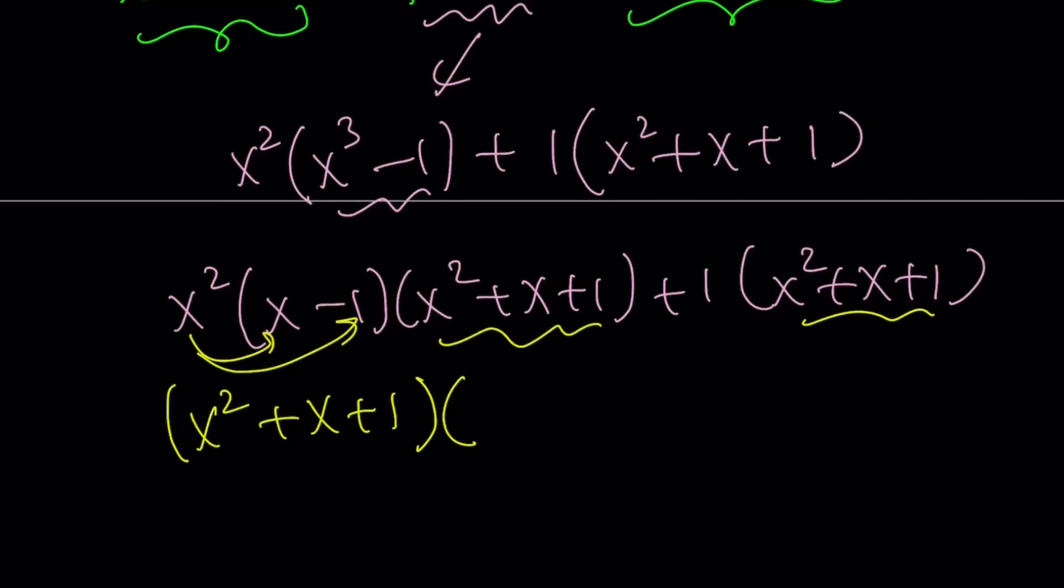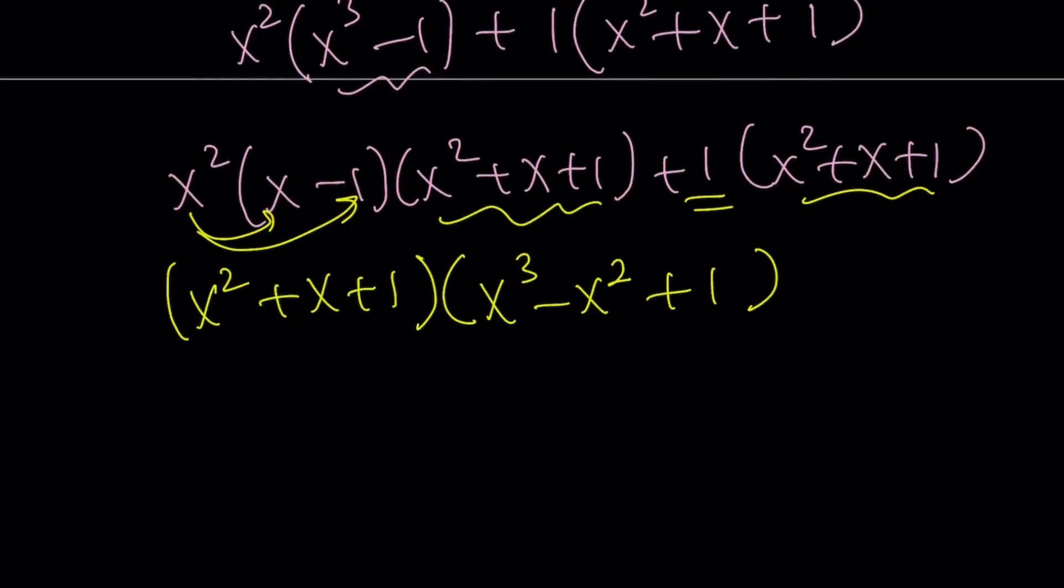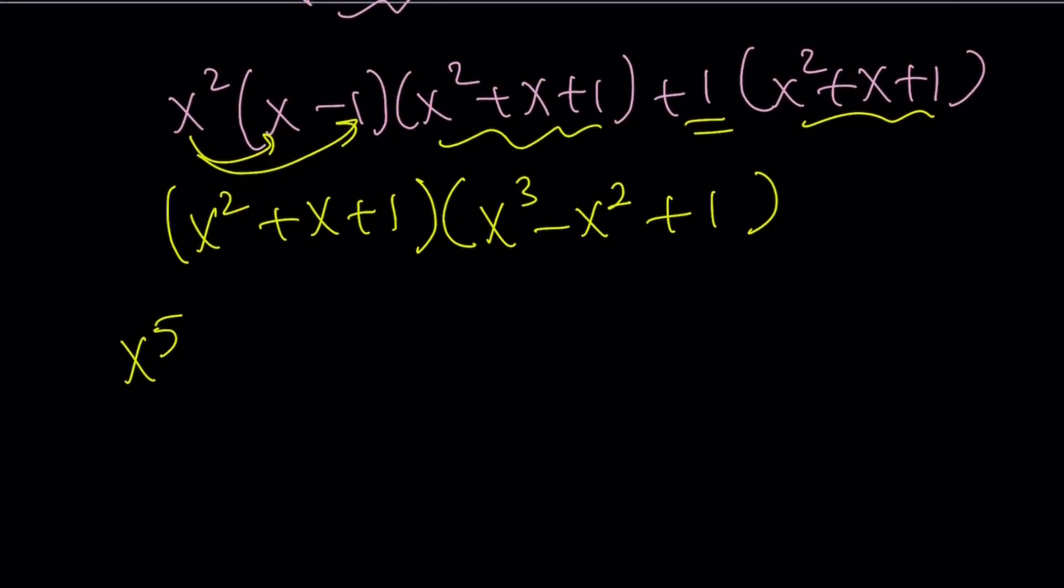If you go ahead and use the distributive property, just multiply, you're going to get x cubed minus x squared, and then from here, you're just going to get plus one. So, what is that supposed to mean? Let's go back to the original problem.